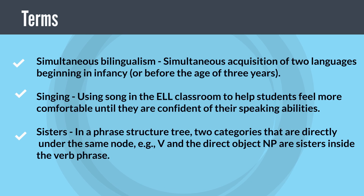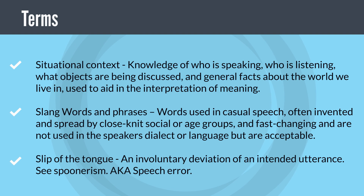Sisters: in a phrase structure tree, two categories that are directly under the same node. For example, V and the direct object NP are sisters inside the verb phrase.